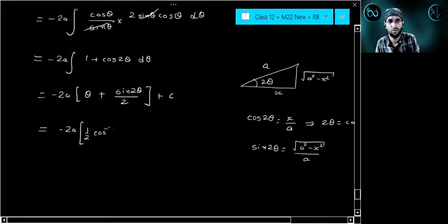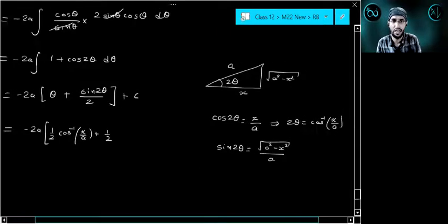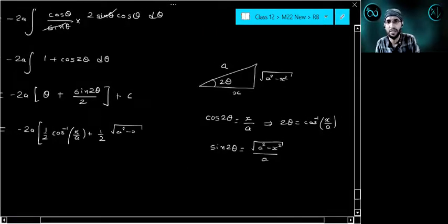The answer is 1 by 2 cos inverse x by a plus 1 by 2 sin 2 theta under root a square minus x square upon a plus c.